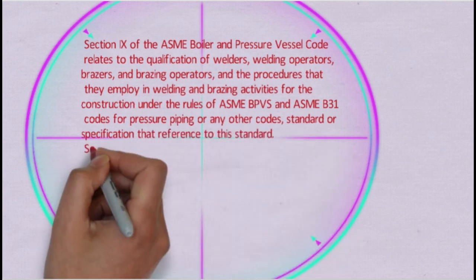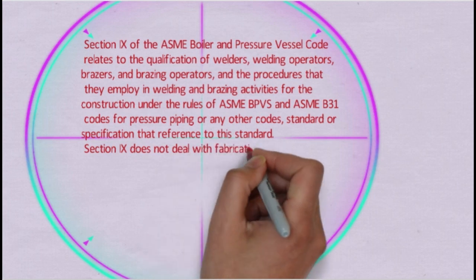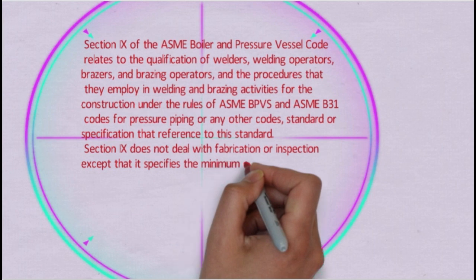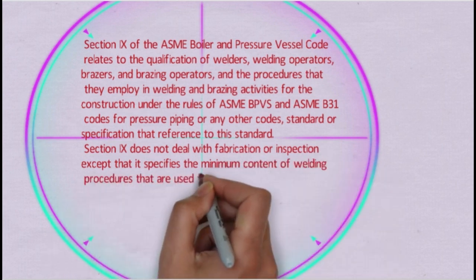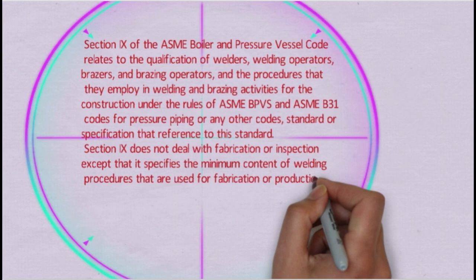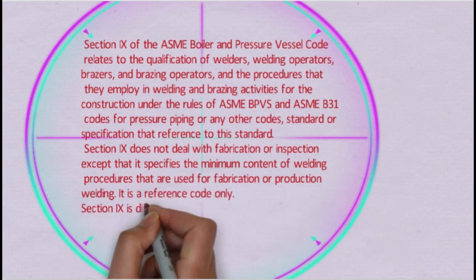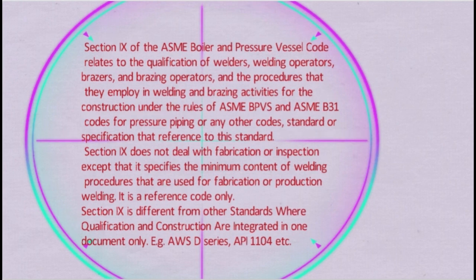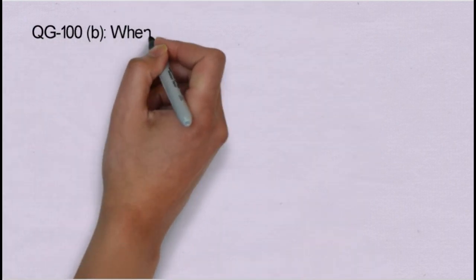Section 9 does not deal with fabrication or inspection because it is a reference code, except that it specifies the minimum content of welding procedures used for fabrication or production welding. Section 9 is different from other standards where qualification and construction are integrated in one document — for example, D1.1, D1.2 series, or API 1104, which cover the full scope of construction as well as qualification.